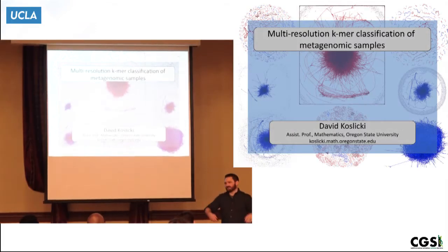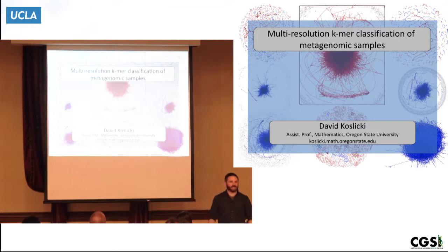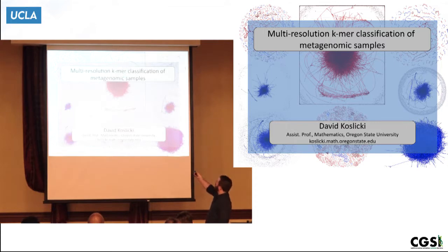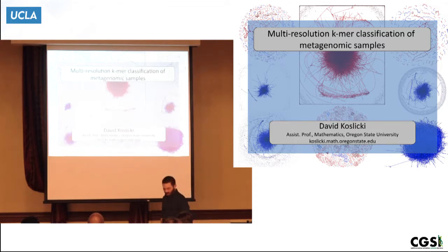Most of you don't really need me to introduce myself, but for completeness sake: David Koslicki, math department, Oregon State University. I'm going to be talking about K-mer classification of metagenomic samples.